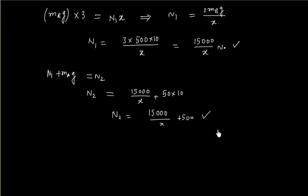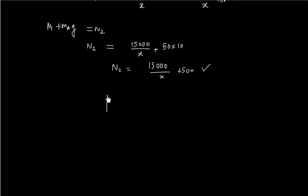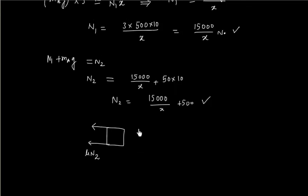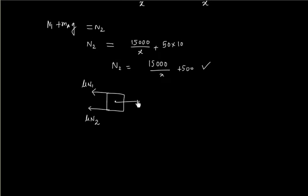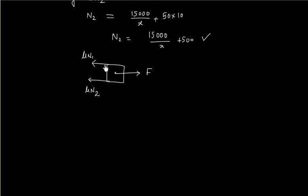Now once I know normal reaction, we can basically calculate friction force all over this block. So one friction force is acting over this surface, another friction force acting over this surface. Over this surface we have this is mu N2, and here we will have mu N1. There is a force that is acting, that is F. So now we can write equation of motion for block A.